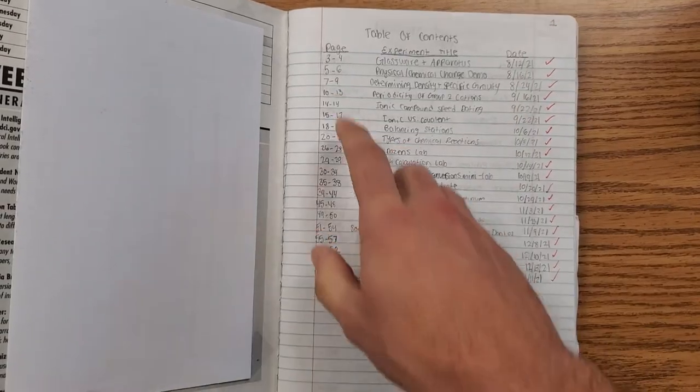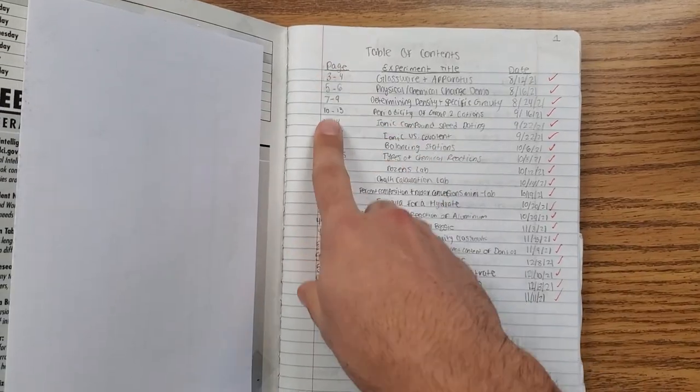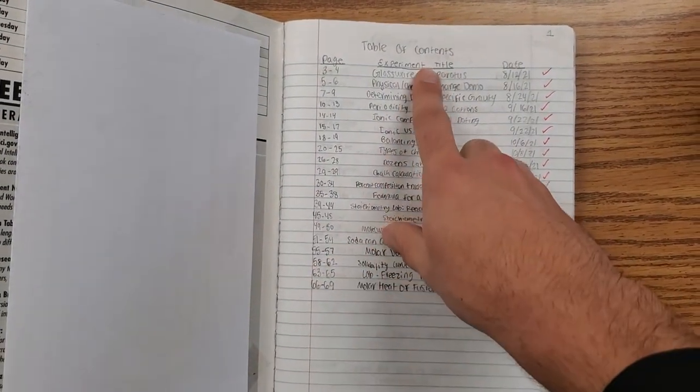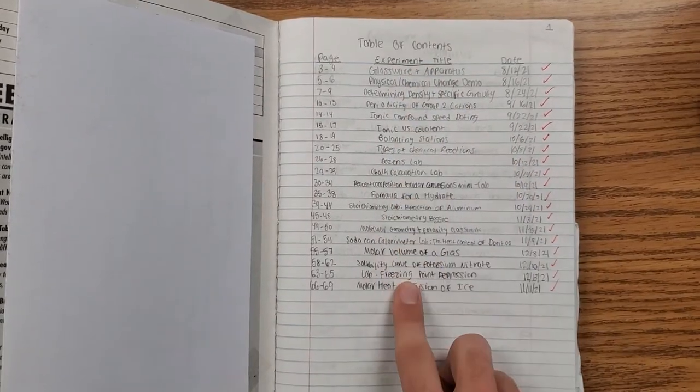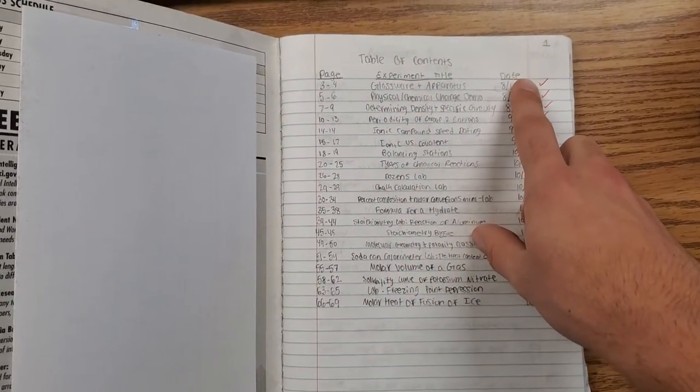And then on our first one, our table of contents, you're going to have a column for the page numbers, a column for the experiment title, and a column for the date.